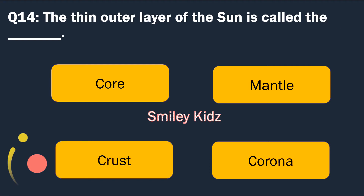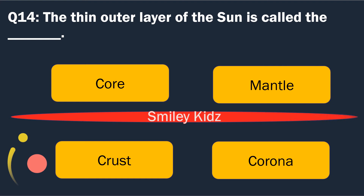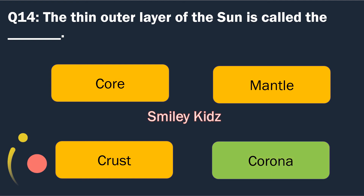Question number 14. The outer layer of the sun is called the. Options are: Core, Mantle, Crest and Corona. The right answer is Corona. The outer layer of the sun is called the Corona.